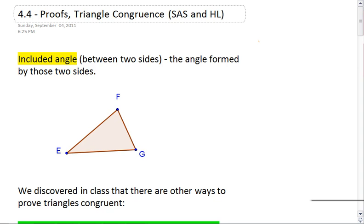Section 4.4, More Proofs. We're going to look at how to prove more triangles congruent, but this time we're looking at SAS and HL, where SAS is side angle side and HL is hypotenuse leg.